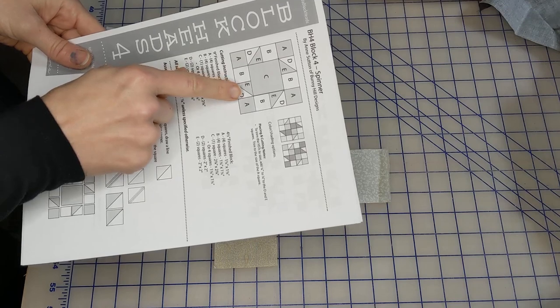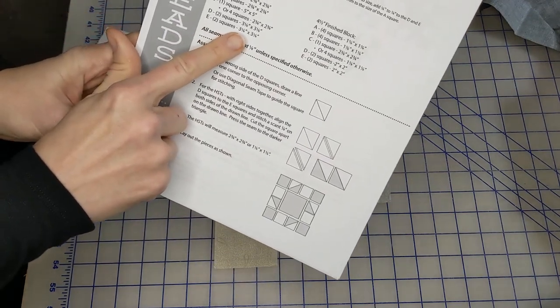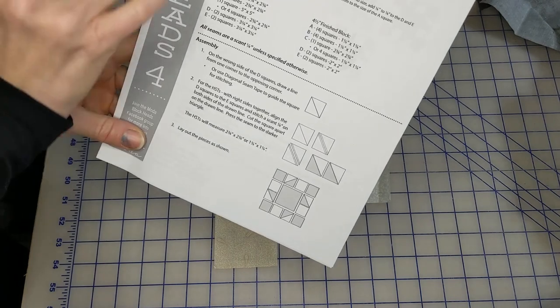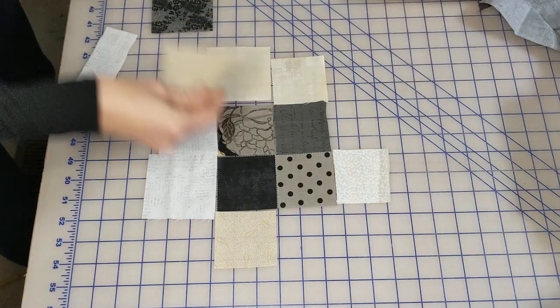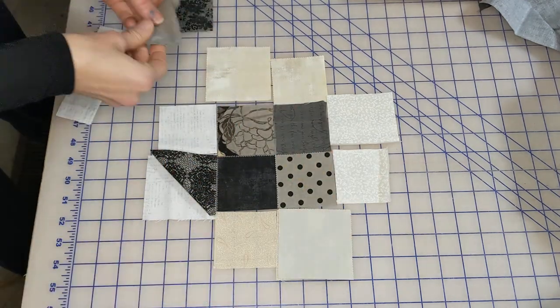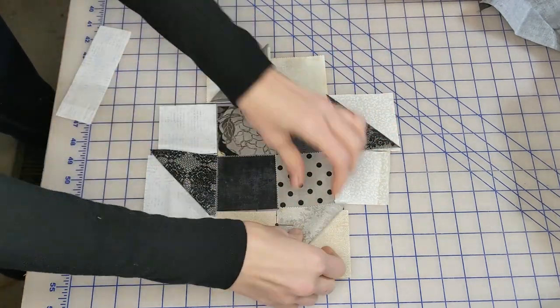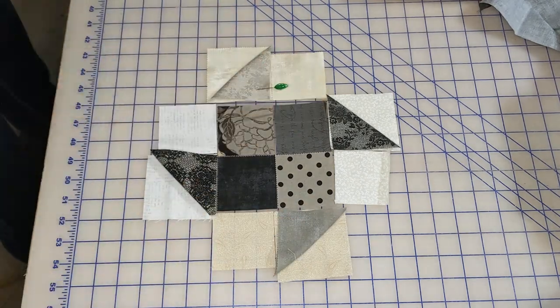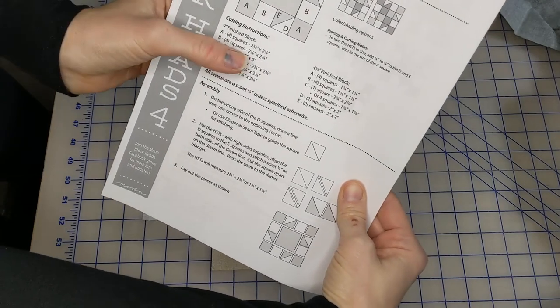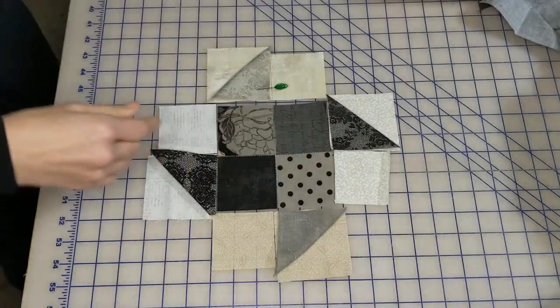We then have four half-square triangles. The half-square triangles are cut at three and an eighth by three and an eighth. I am going to cut mine at three and a quarter, and then we'll stitch them and trim them down. And then our four outside corners are cut two and three-quarter by two and three-quarter. It says four squares. I've cut four separate colors.